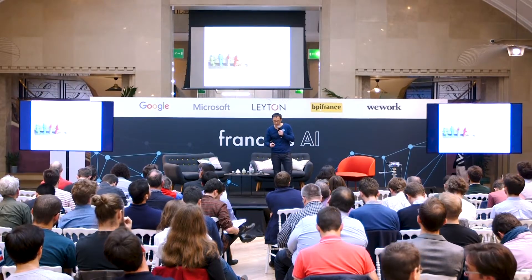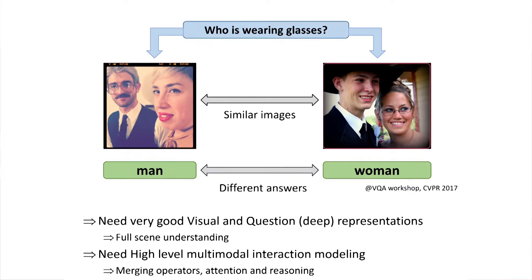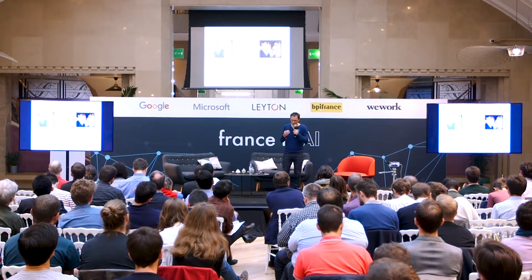There are many small difficulties to handle. For instance, if only one word changes in the question but the image is the same, the answer must be different. Similarly, two visually similar images with the same question can require different answers. We really need representations that are as good as possible to handle these cases.